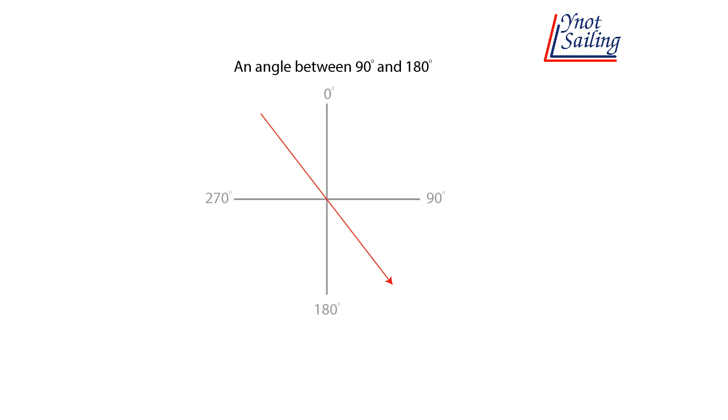In this example, it's clear that the answer must be between 90 and 180. I'm sure by now you're getting the hang of this. This one is clearly between 180 and 270. And finally, here's the last quadrant. This one is between 270 and 360, otherwise known as 0 degrees.